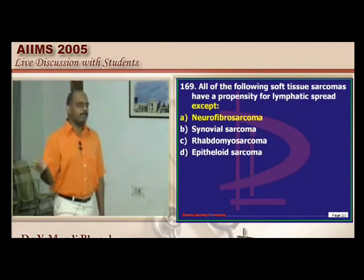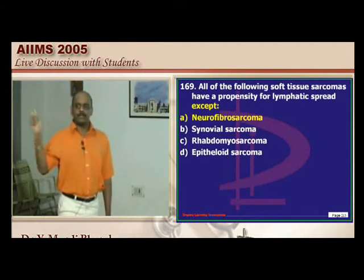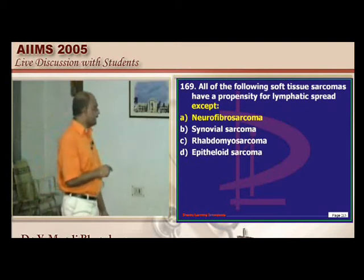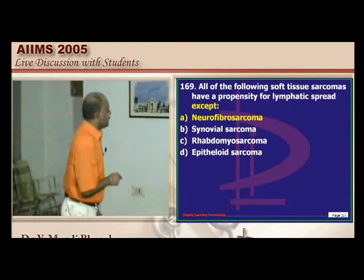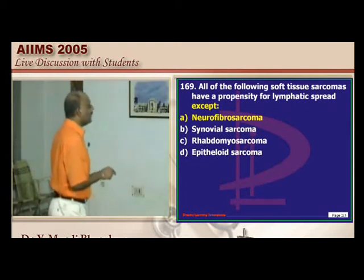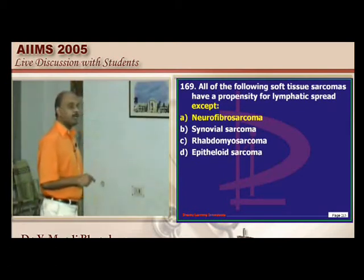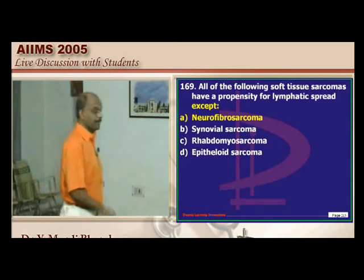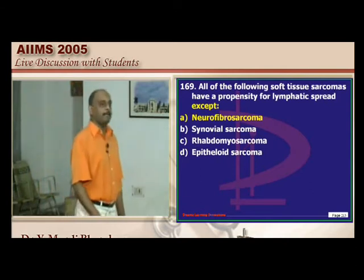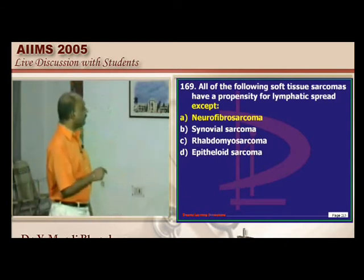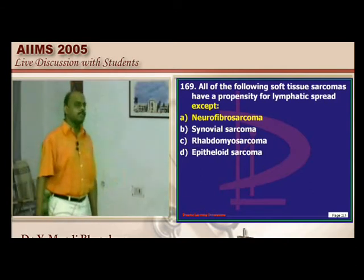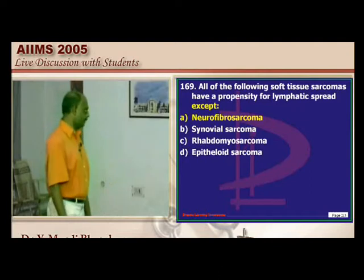Sarcomas spread hematogenously and carcinomas spread lymphatically. The exceptions: synovial sarcoma, rhabdomyosarcoma, and epithelioid sarcoma spread lymphatically atypically, whereas neurofibrosarcoma spreads hematogenously.